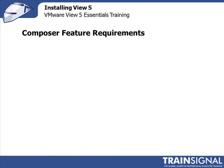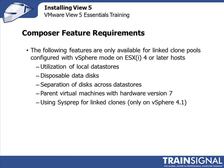The following Composer features are only available for link clone pools when using vSphere mode on ESX 4 or later hosts. One is the utilization of local datastores — the ability to have link clones use local datastores instead of expensive SAN storage. Obviously you can't vMotion those desktops and high availability won't work for them, but it allows you to achieve cost savings if you don't want to use expensive SAN storage.